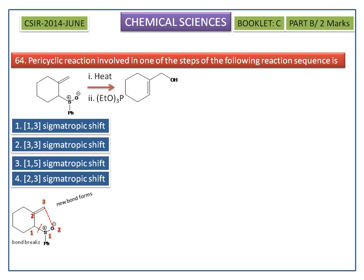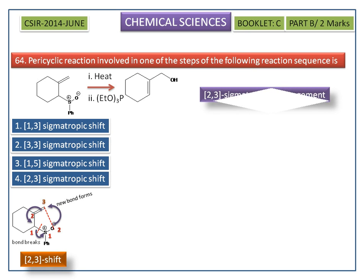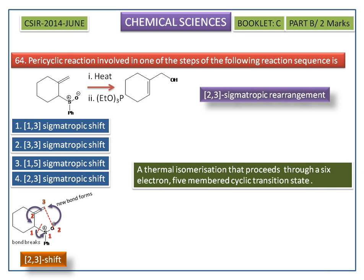Now we see how the electrons are transferred synchronously. From this observation we can say it follows a 2,3-sigmatropic shift. The 2,3-sigmatropic rearrangement is a thermal isomerization that proceeds through a 6-electron, 5-membered cyclic transition state.